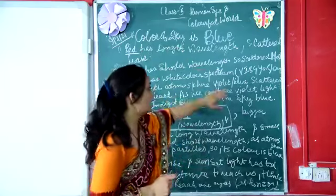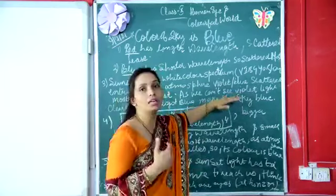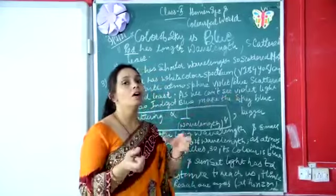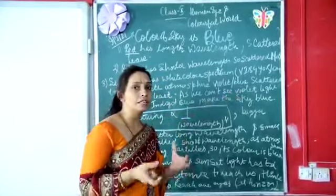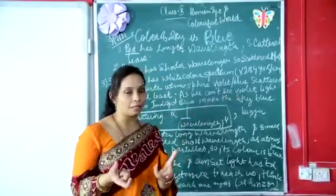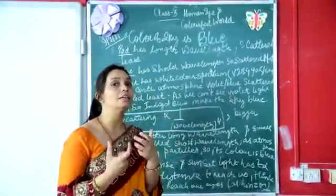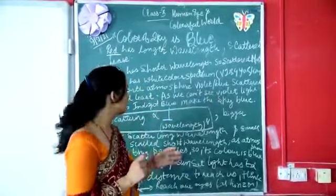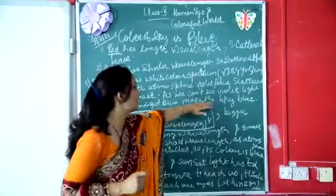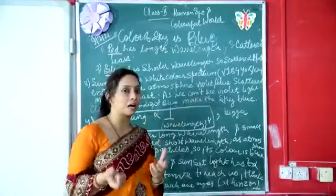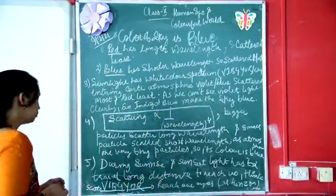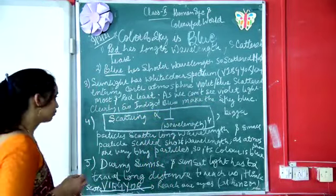Why not violet? Because as humans we cannot see violet and indigo light as clearly. So that's why the combination of indigo and blue makes the sky appear blue in color.